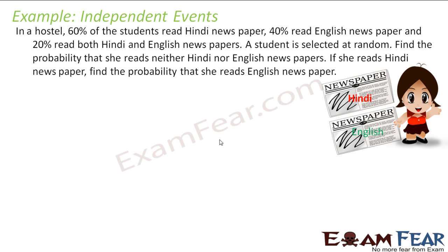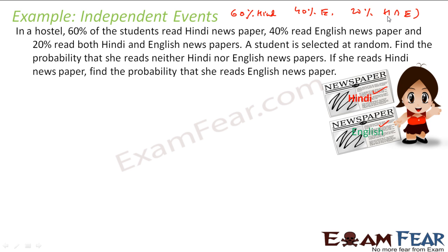Next example: in a hostel, 60% of the students read a Hindi newspaper, 40% read an English newspaper, and 20% read both English and Hindi. A student is selected at random. Find the probability that she reads neither Hindi nor English newspaper, and if she reads a Hindi newspaper, find the probability that she also reads an English newspaper. Let me draw a Venn diagram to make this clear.